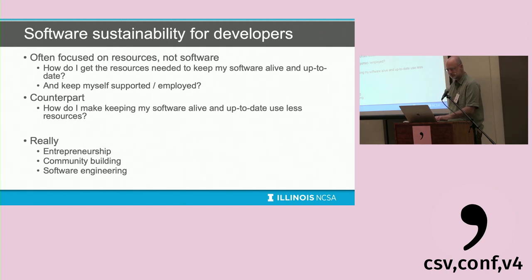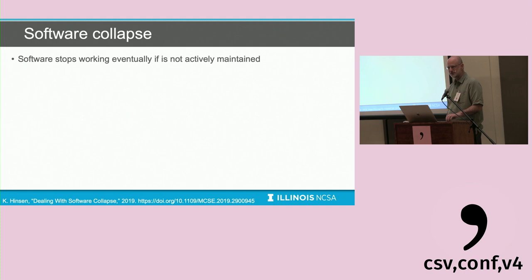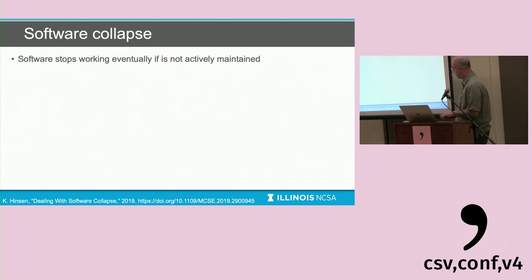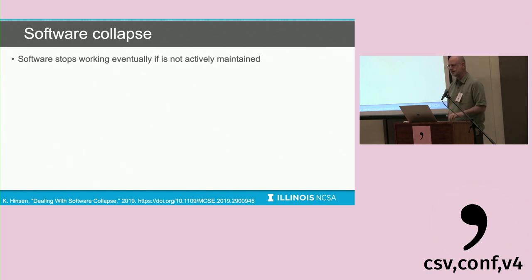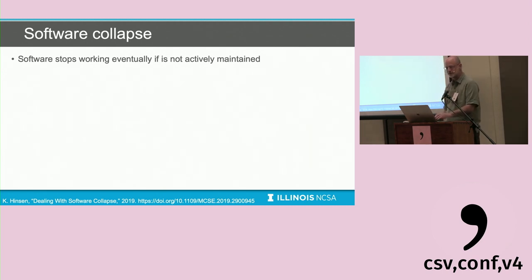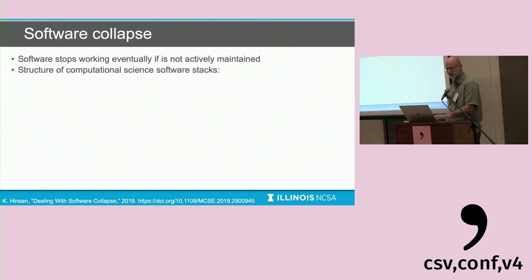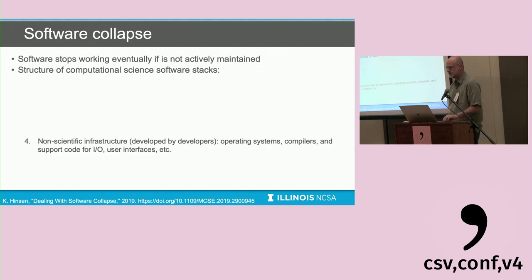I want to introduce the concept of software collapse. Conrad Henson wrote about this in a blog and a paper in Computing in Science and Engineering. Software collapse is the fact that software stops working eventually even if it's not actively maintained. Computational science software stacks — and data analytics stacks as well — have at the bottom a layer of non-scientific infrastructure developed by software developers, including operating systems, compilers, support code for I/O, and user interfaces.